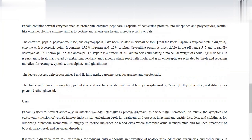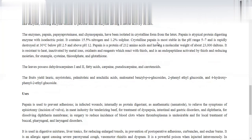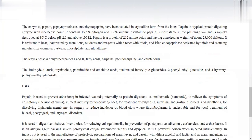Papain is a protein of 212 amino acids with molecular weight 23,000 daltons. It is resistant to heat but inactivated by metal ions. It reacts with oxidants and reagents containing thiols and is an endopeptidase activated by thiols and reducing moieties like cysteine, thiosulfate, and glutathione.